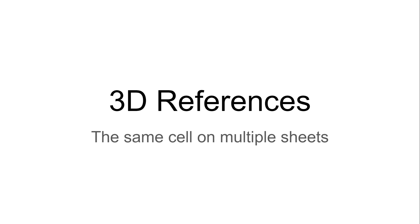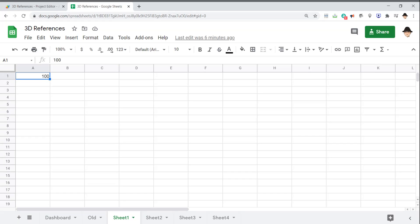Welcome back, and today one of my favorite scripts that I've ever written to hack Google Sheets. 3D references are referencing the same cell on multiple sheets. So instead of just saying Sheet 1, A1 through A5, we're actually looking for A1 on multiple sheets.